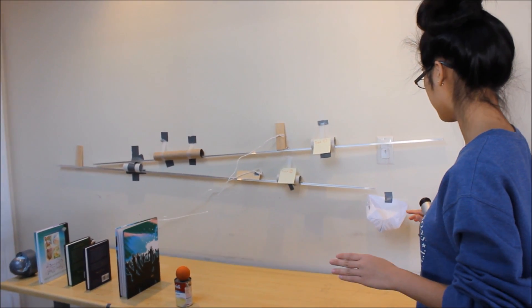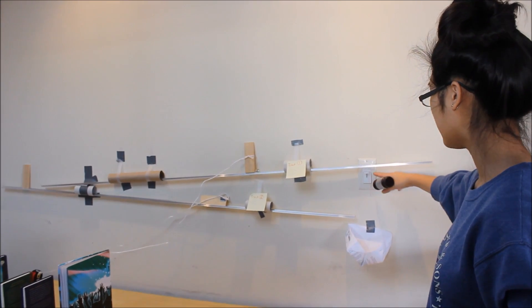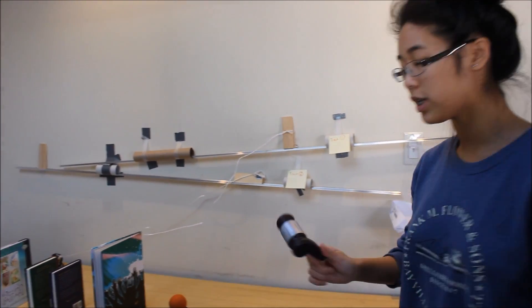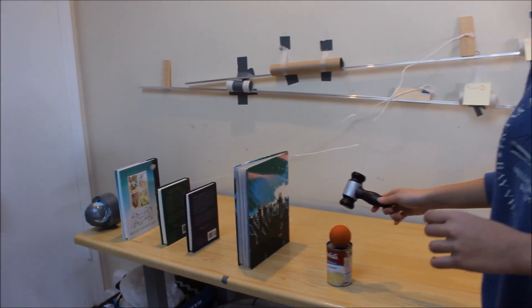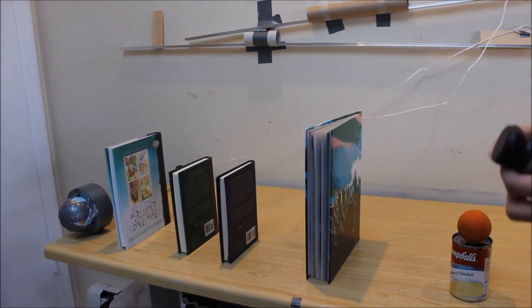So the purpose of this Rube Goldberg machine is to use a convoluted way to turn off this light switch. And this light switch will be brought down to turn these lights off. So the first thing I will do is I will use this mallet to hit into this ball. And when this ball is hit by this mallet,